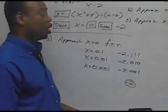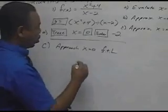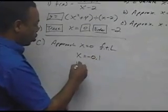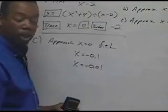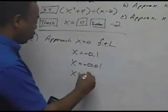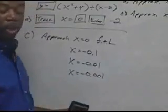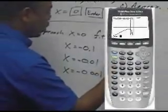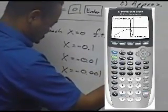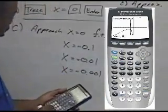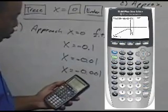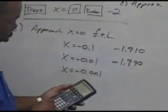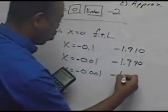Now let's look at the output of approaching x = 0 from the left. We'll use numbers to the left of 0: -0.1, then -0.01 which is closer to 0, and -0.001, which is even closer. Typing in -0.1 and Enter gives -1.910. Then -0.01 gives -1.9910. Then -0.001 gives -1.999.